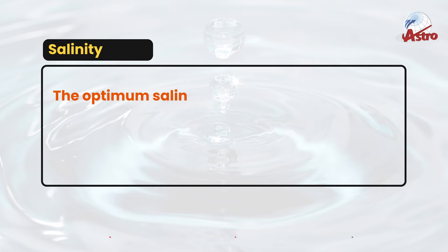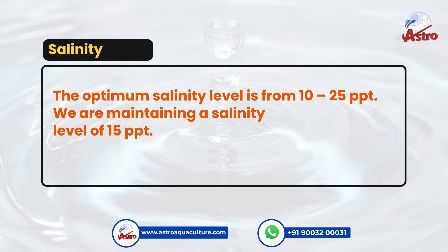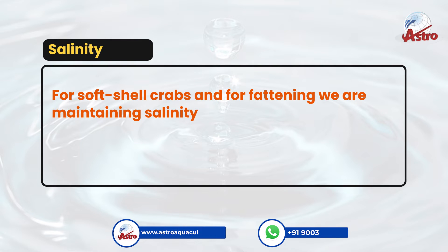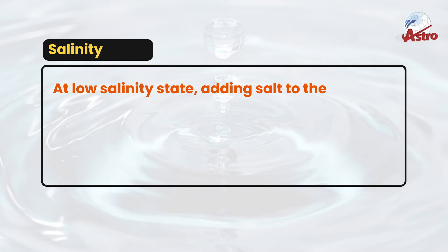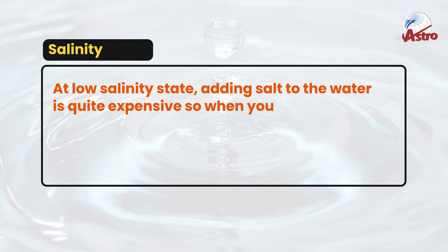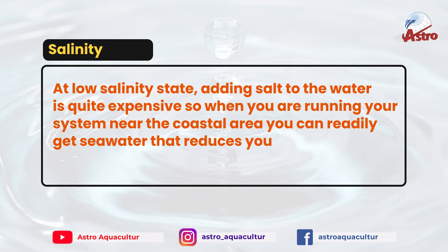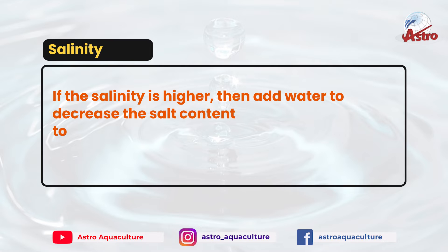The optimum salinity level is from 10 to 25 ppt. We are maintaining a salinity level of 15 ppt. For soft-shell crabs and for fattening we are maintaining salinity of 16 ppt, and for growing the crabs we increase the ppt value. Adding salt to the water is quite expensive, so when you are running your system near the coastal area you can readily get seawater to reduce your cost. If the salinity is higher, then add water to decrease the salt content to a balanced state.